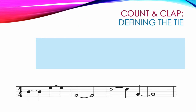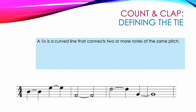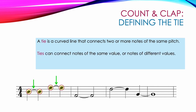We'll start by defining the tie. A tie is a curved line that connects two or more notes of the same pitch. Here's a curved line connecting two notes that are both on the third line of the staff. Here's a tie connecting two notes that are both on the fourth space of the staff. Ties can connect notes of the same value or notes of different values. We've seen a tie connect two quarter notes together, and here we have an example of a tie connecting two half notes. But they don't have to be the same value — a tie can connect a half note on the fourth line to a quarter note on the fourth line.